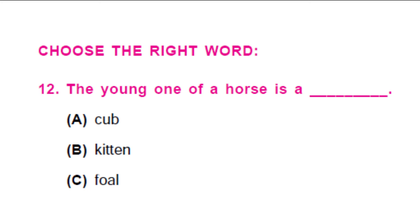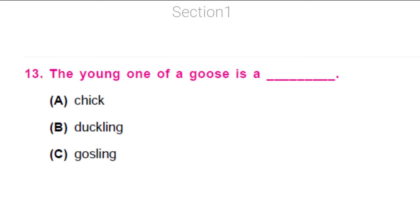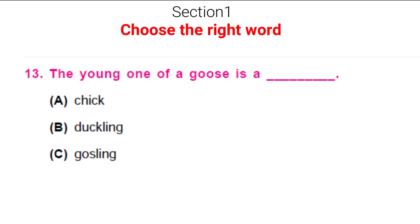Now in this next section, we need to choose the right word to fill in the blank. Tell me, the young one of a horse is a? Think, think. The young one of a goose — choose from the given options. The right answer for this is option C, gosling. So a baby goose is called a gosling.